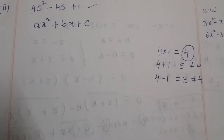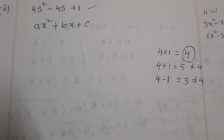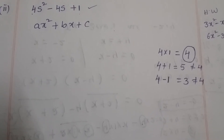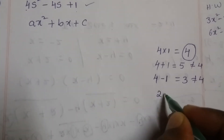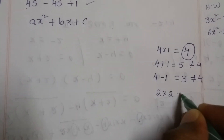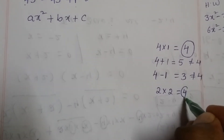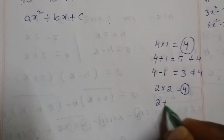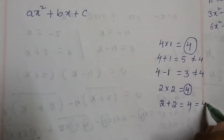The possible factors of 4 are: 1×4=4, 2×2=4, and 4×1=4. Taking 2×2=4, we check: 2+2=4, which equals the middle term 4. So this works.